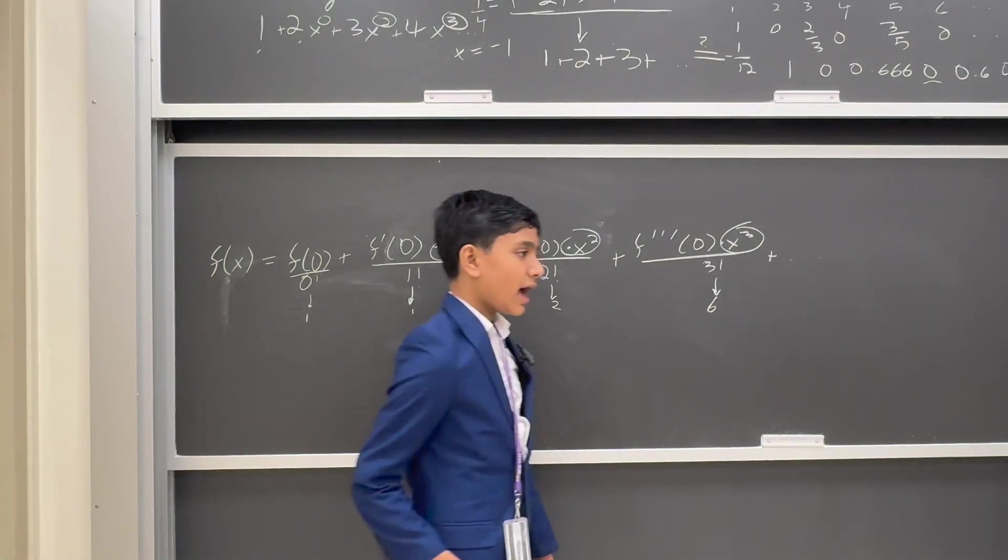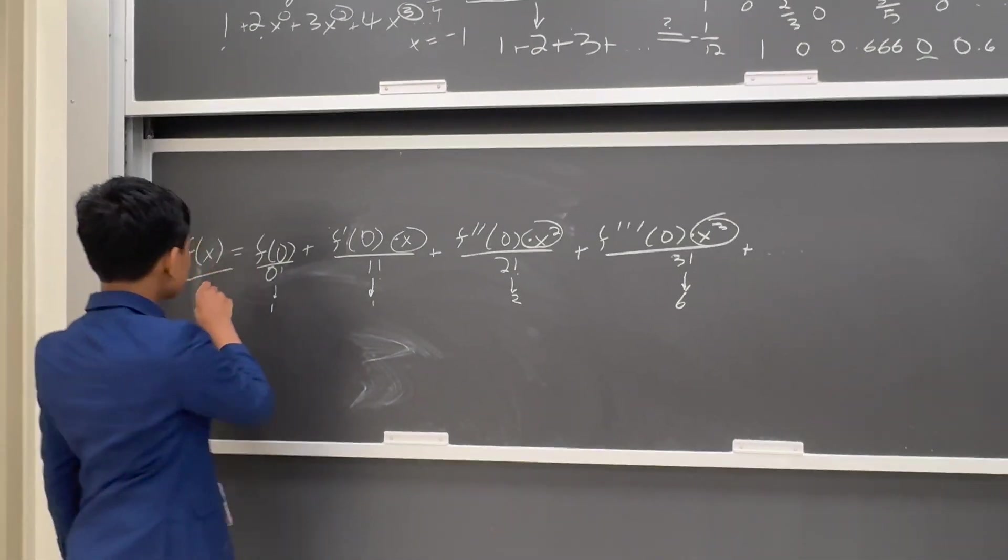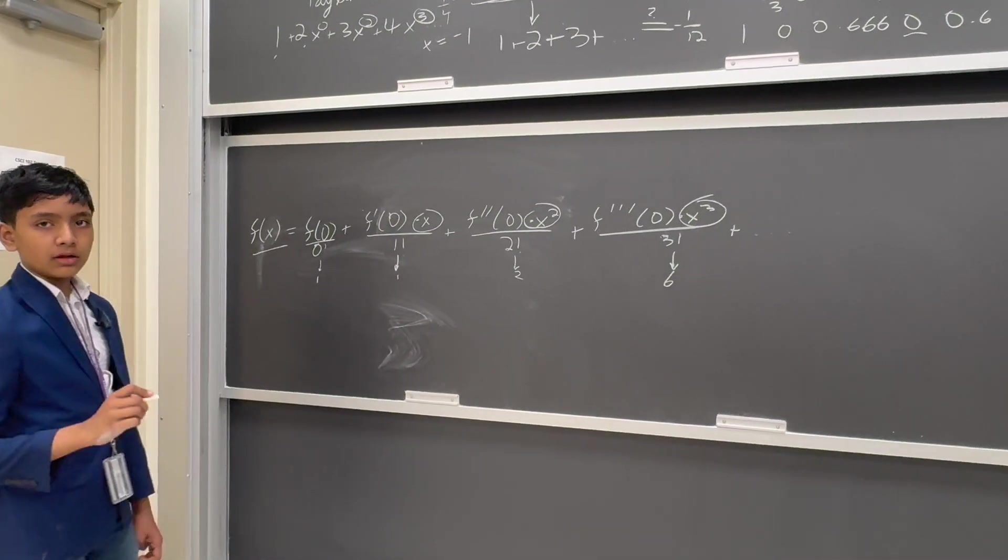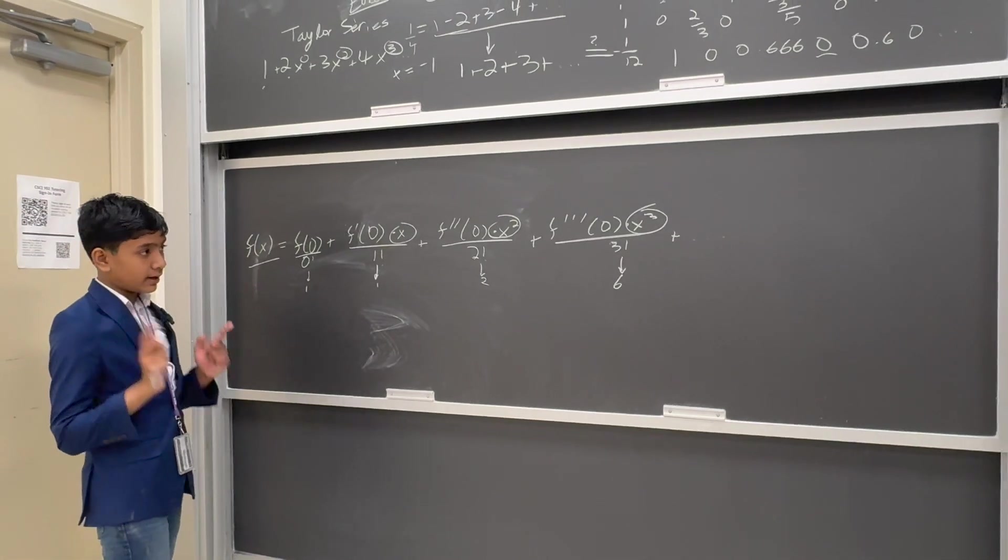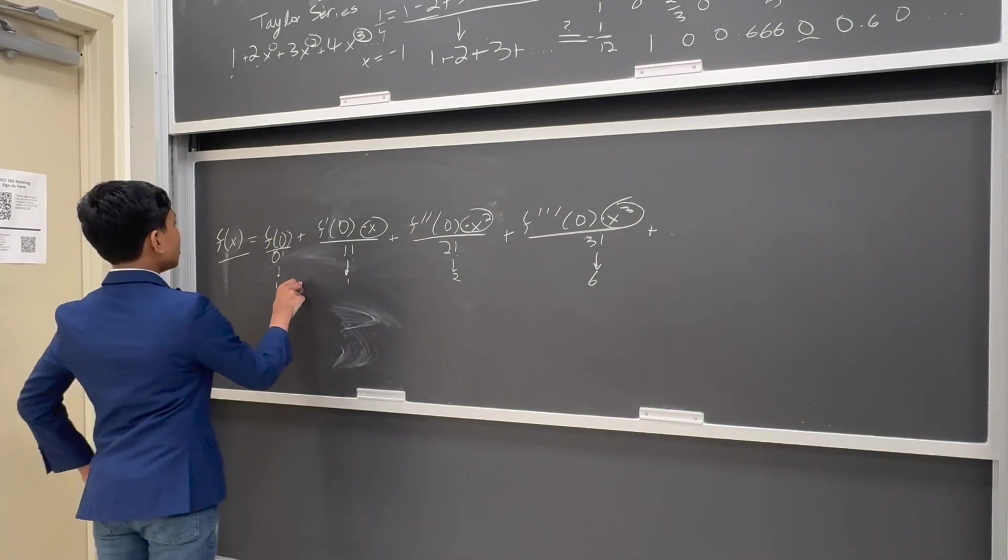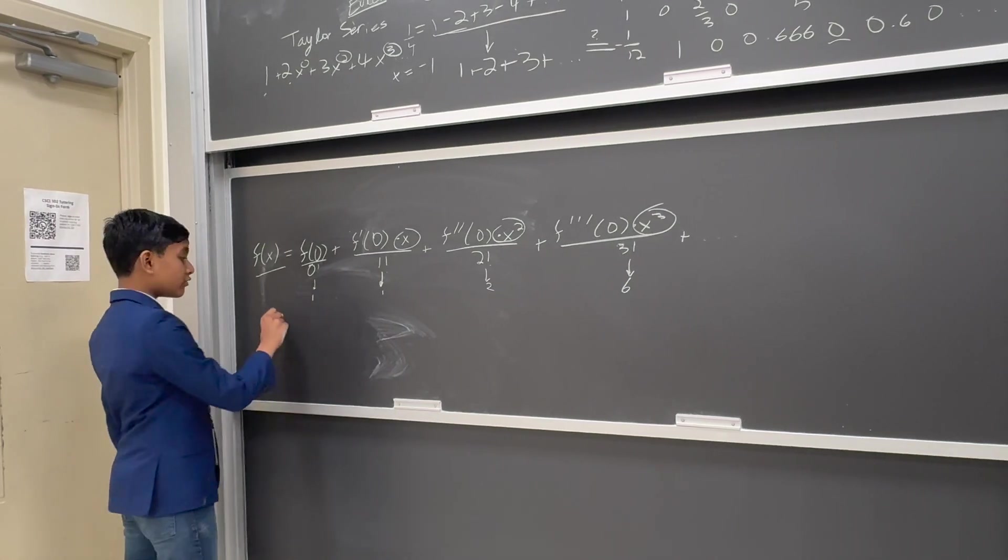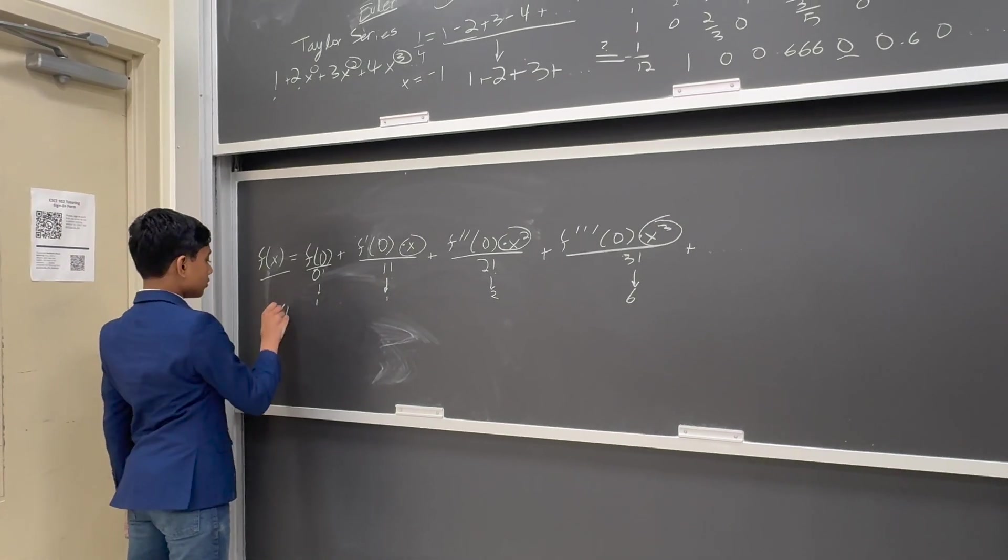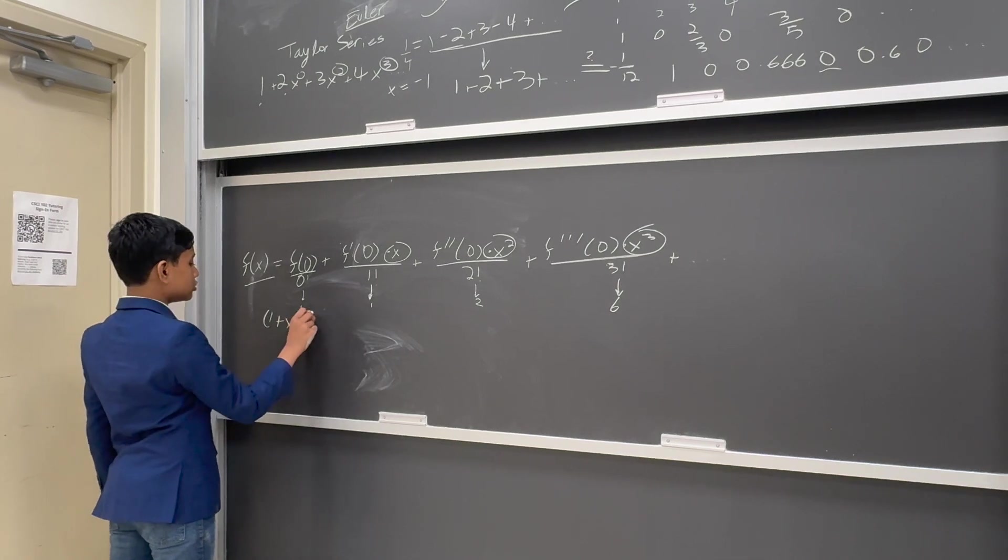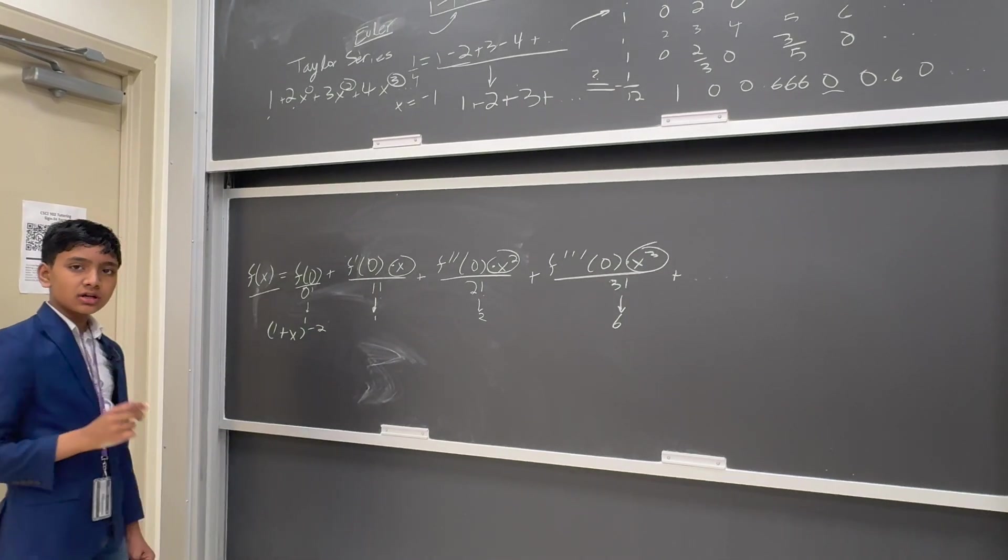But does it actually have something on the other side over here? Well, we'll find out just right now. So the answer is actually yes. That function is (1 plus x) to the minus 2. How can we see this?